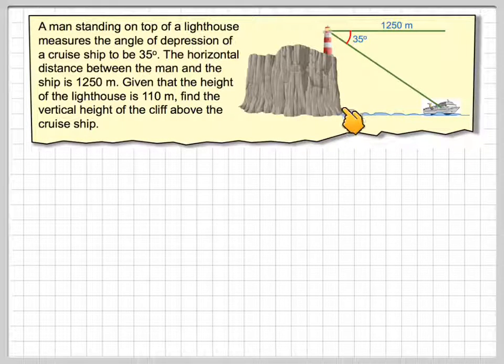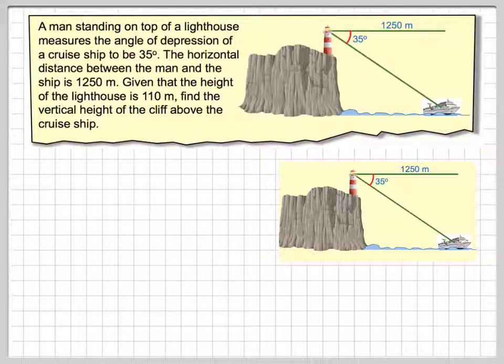So what we've got here is a cliff. We have to find the vertical height. We know the height of the lighthouse is 110. The man is standing at the top and therefore the angle of depression is the angle looking downwards from a horizontal. So this is called an angle of depression. Then what we've got to find is this vertical height here using the information given in the question. So there's a diagram.